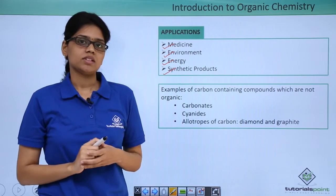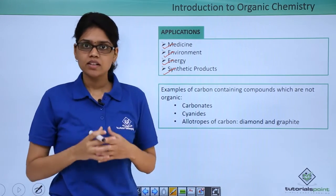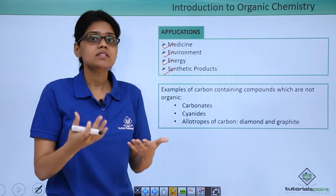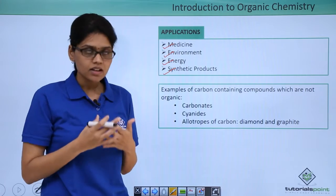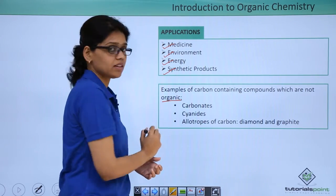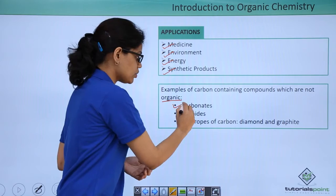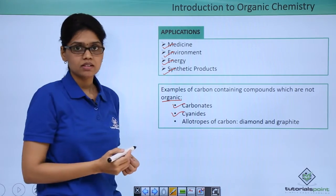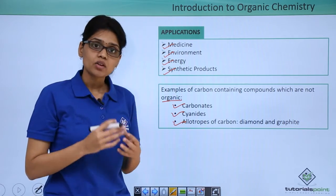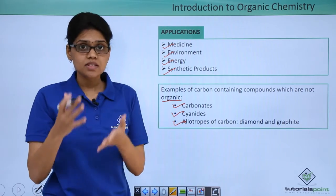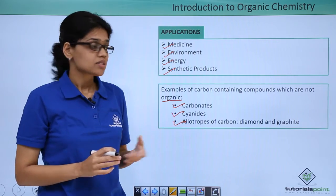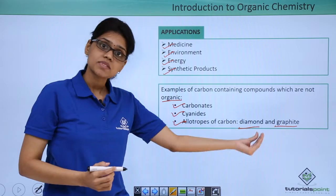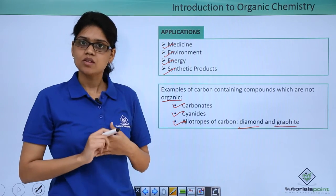Now another important thing. This is all about the study of carbon containing compounds. Are there any carbon compounds which cannot be studied as organic? There are carbon compounds which cannot be classified as organic, and they are carbonates CO3 2-, cyanides CN-, and allotropes of carbon. Allotropes are nothing but different physical forms of a given element. The allotropes of carbon are diamond and graphite. They themselves cannot be classified as organic.